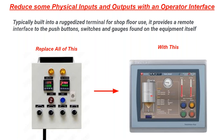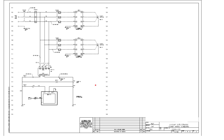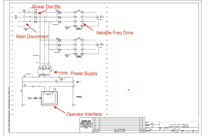Going back to an example of a two-pump circuit, you can see the main disconnect, power distribution block, variable frequency drives, the power supply, and the operator interface. Three-phase power comes in, gets distributed, a power supply converts it to 24VDC for control voltage, and you'll also see a pilot light as well.